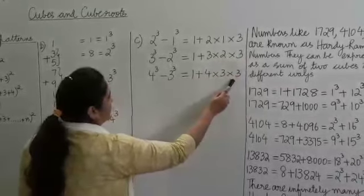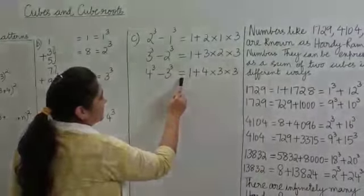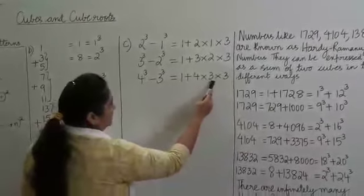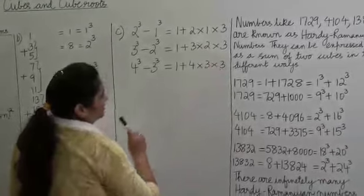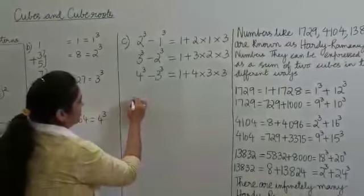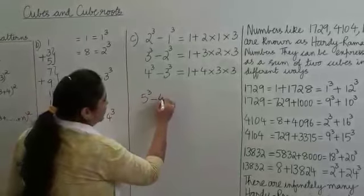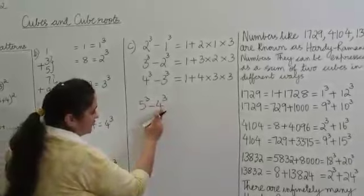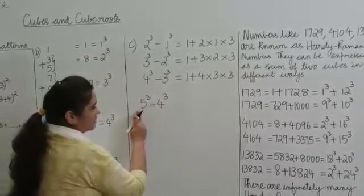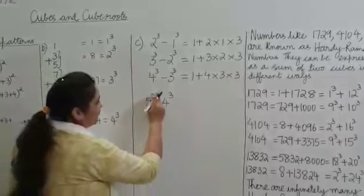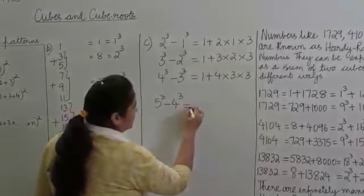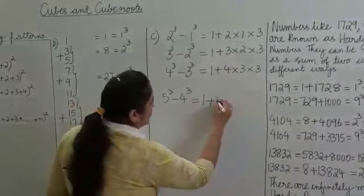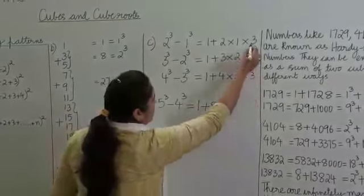4 cubed minus 3 cubed can be written as 1 plus 4 into 3, into 3. Let's try another one: 5 cubed minus 4 cubed. 4 and 5 are two consecutive natural numbers. So 5 cubed minus 4 cubed can be written as 1 plus 5 into 4, into 3.